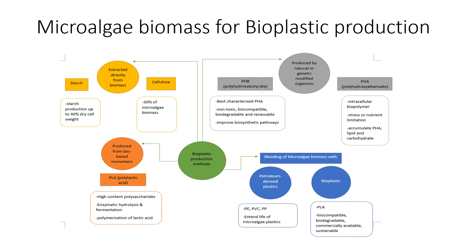On this slide, we're focusing on bioplastic production from microalgae biomass. There are four methods to produce bioplastics. First, starch and cellulose are extracted directly from biomass. Second, bioplastics can be produced from bio-based monomers such as polylactic acid. Third, bioplastics can be produced by natural or genetically modified organisms such as polyhydroxybutyrate and polyhydroxyalkanoates. Lastly, bioplastics can be made from blending of microalgae biomass with petroleum-derived plastics and bioplastics.